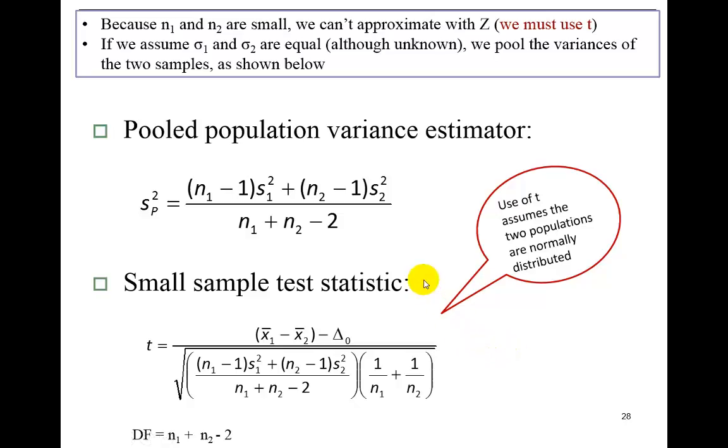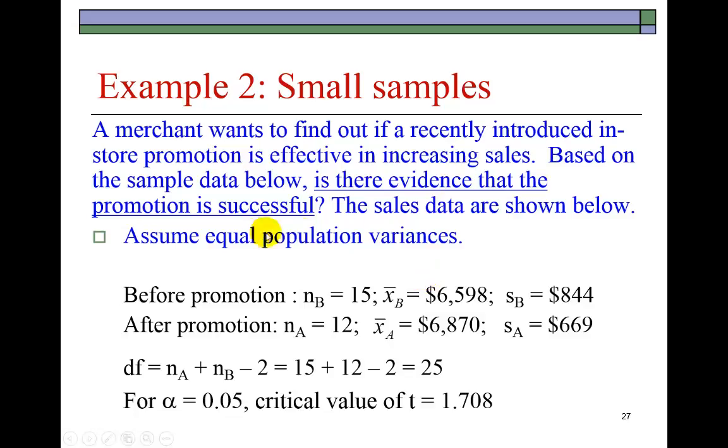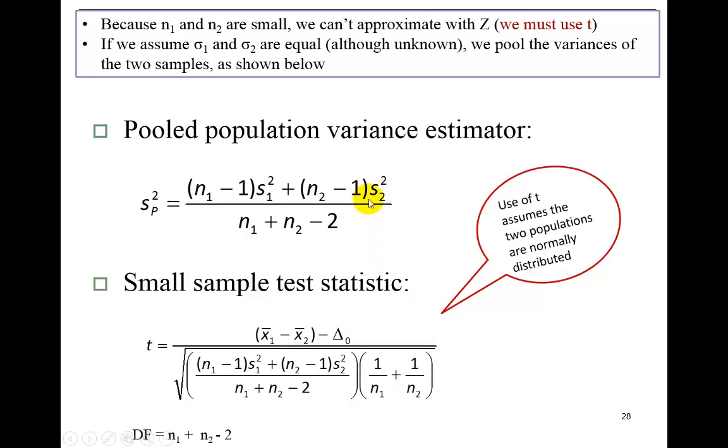Going right back here, we're told to assume equal population variance. What this means is we're going to have to pool the variances from the two populations and then plug it in here within the standard error definition of the T statistic.